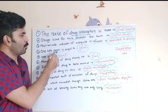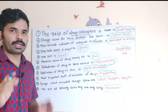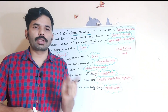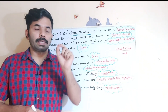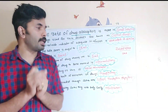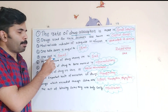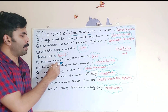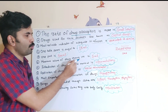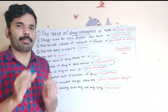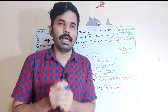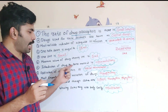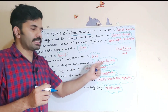One tablespoon is equal to 15 ml. One teaspoon is equal to 5 ml. One pint is equal to 500 ml. The minimum volume of drug through intramuscular (IM) injection is 5 ml.